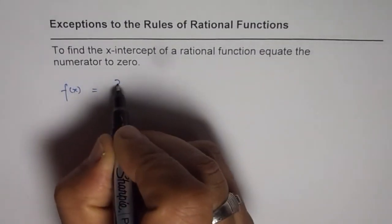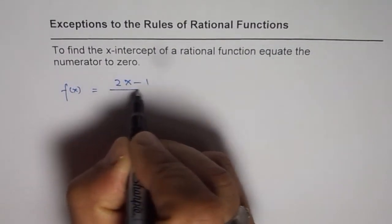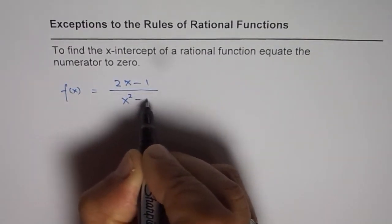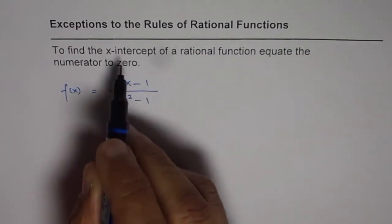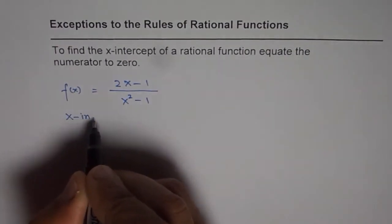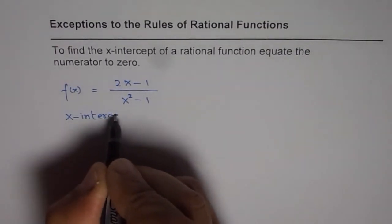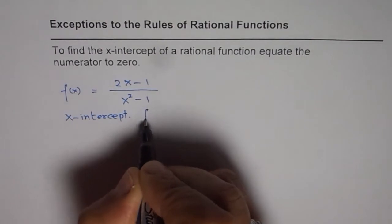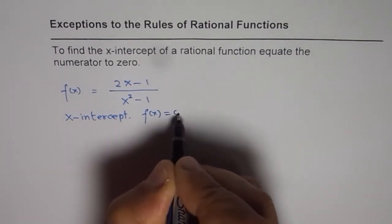Let's say the function is 2x minus 1 divided by x squared minus 1. In that case, if we have to find the x-intercept, what are we going to do? For x-intercept, we know f(x) should be equal to 0, right?